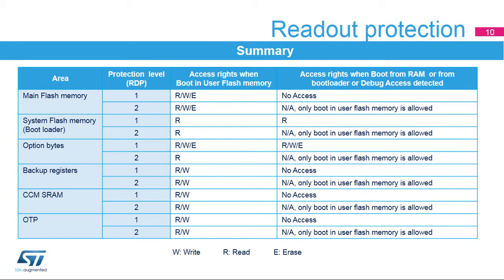This table summarizes the different types of access authorized for the flash memory and backup registers according to the readout protection or RDP level, configured boot mode, and with debug access, as seen in previous slides.